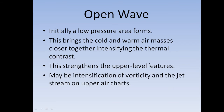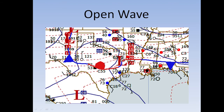There may be intensification of vorticity and the jet stream on upper air charts. Vorticity is the measure of rotation, and upper level divergence occurs when you see that low pressure forming — mass is being removed from the low pressure system, pushed up, then upper level divergence occurs when it hits the tropopause. The jet stream becomes stronger because of that temperature gradient. An open wave is just a low pressure system superimposed over the stationary front with very weak or no thermal advection.